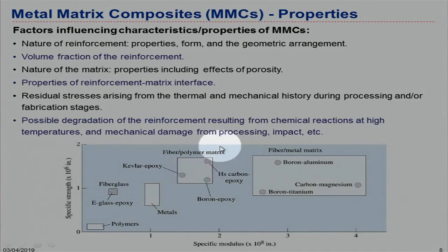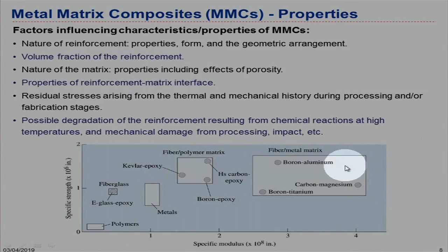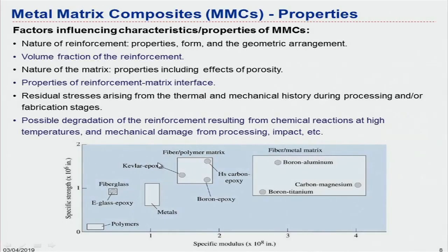Looking at a comparison: here we have polymer matrix composites, and metals are at a similar level. The specific modulus is a bit higher for metal matrix composites compared to polymers. In some applications, we cannot use polymers because of temperature requirements. Engineers must select the best material among these types — PMCs, MMCs, and CMCs — based on their different characteristics.